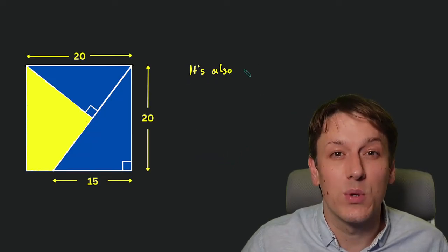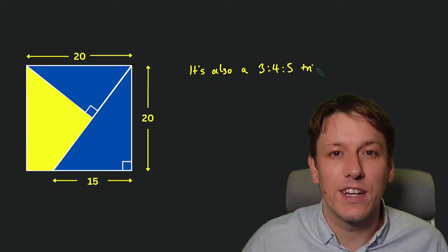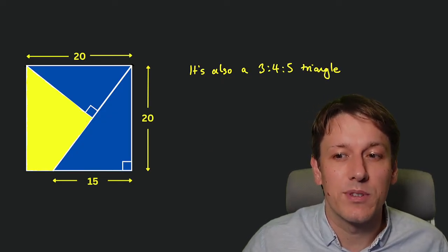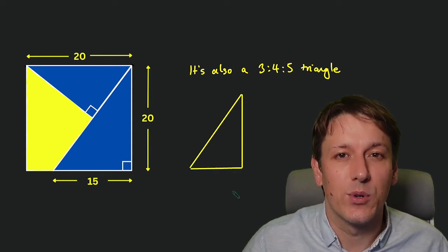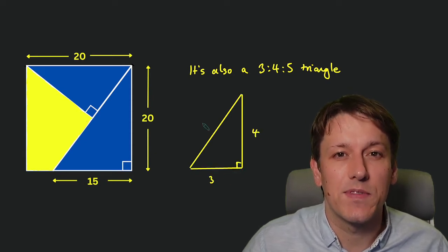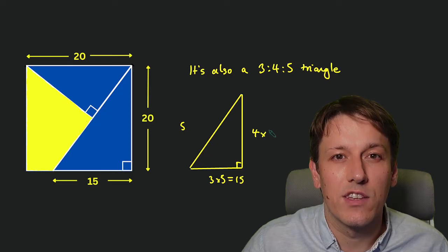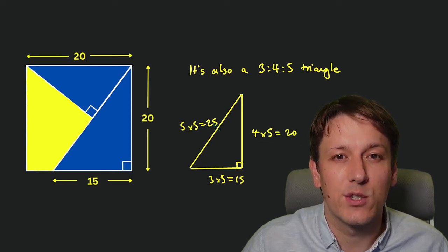We might also have just noticed it's a 3-4-5 triangle, one of the famous Pythagorean triples, because 15 is 3 times 5, 20 is 4 times 5, and 25 is 5 times 5. So it's a 3-4-5 triangle scaled up by a scale factor of 5.